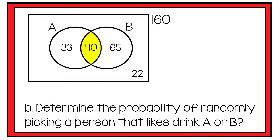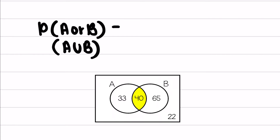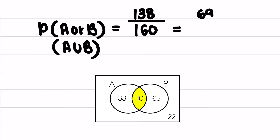The question asks: determine the probability of randomly picking a person that likes brand A or B. The probability of A or B equals the number of people within the two circles: 33 in A only, 40 in the intersection, and 65 in B only, totalling 138 out of 160. That simplifies to 69 over 80.